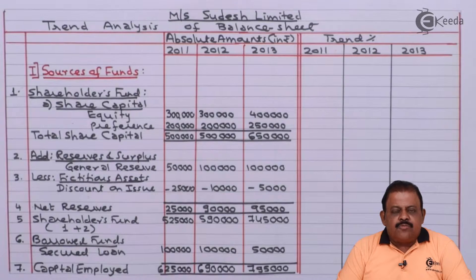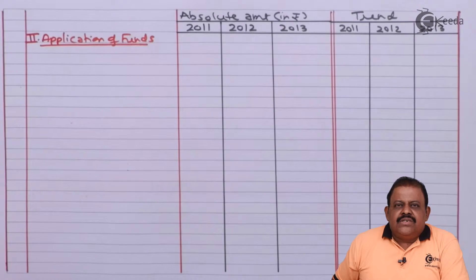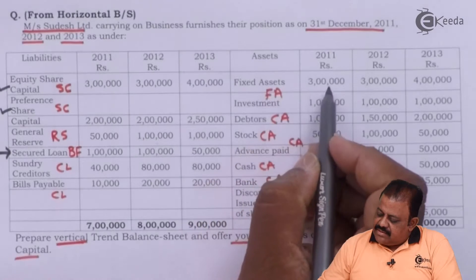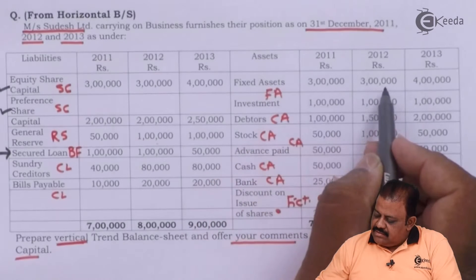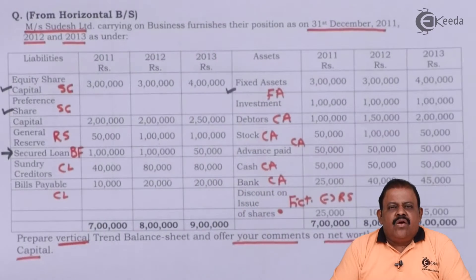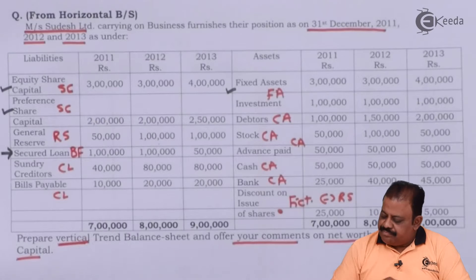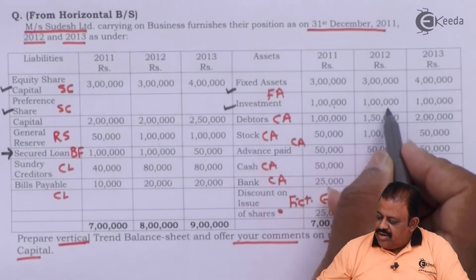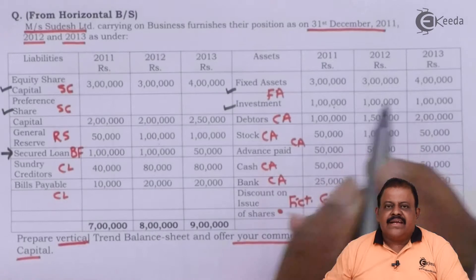In the second part — Application of Funds — first we have fixed assets: 3 lakhs, 3 lakhs, and 4 lakhs. Next we have long-term investments: 1 lakh, 1 lakh, and 1 lakh.